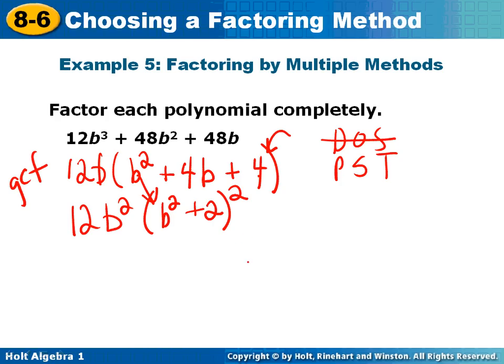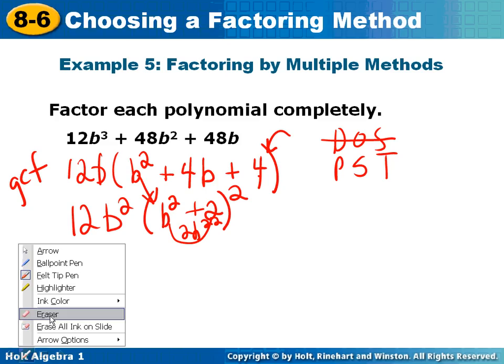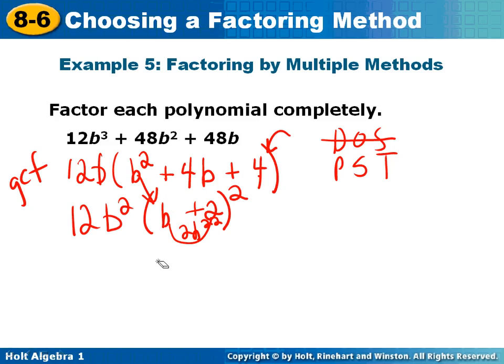Let's check the creamy filling and make sure it worked. b squared times 2 is 2b squared. Then I need to double. I messed up here. Did you catch that? This is not supposed to be a squared.